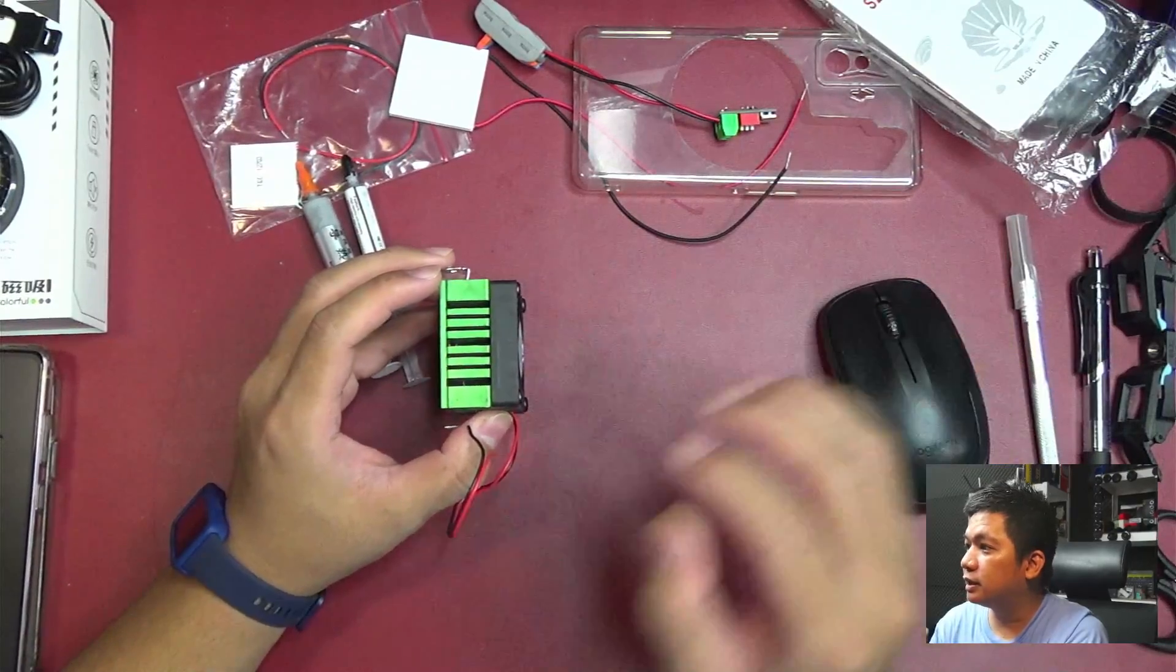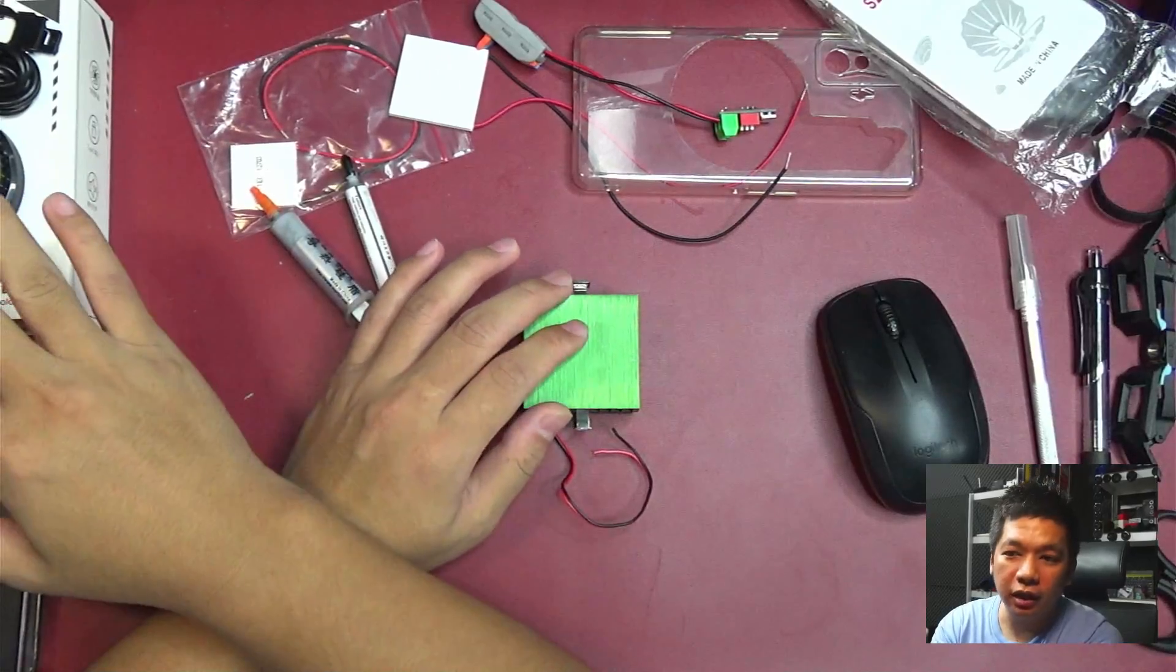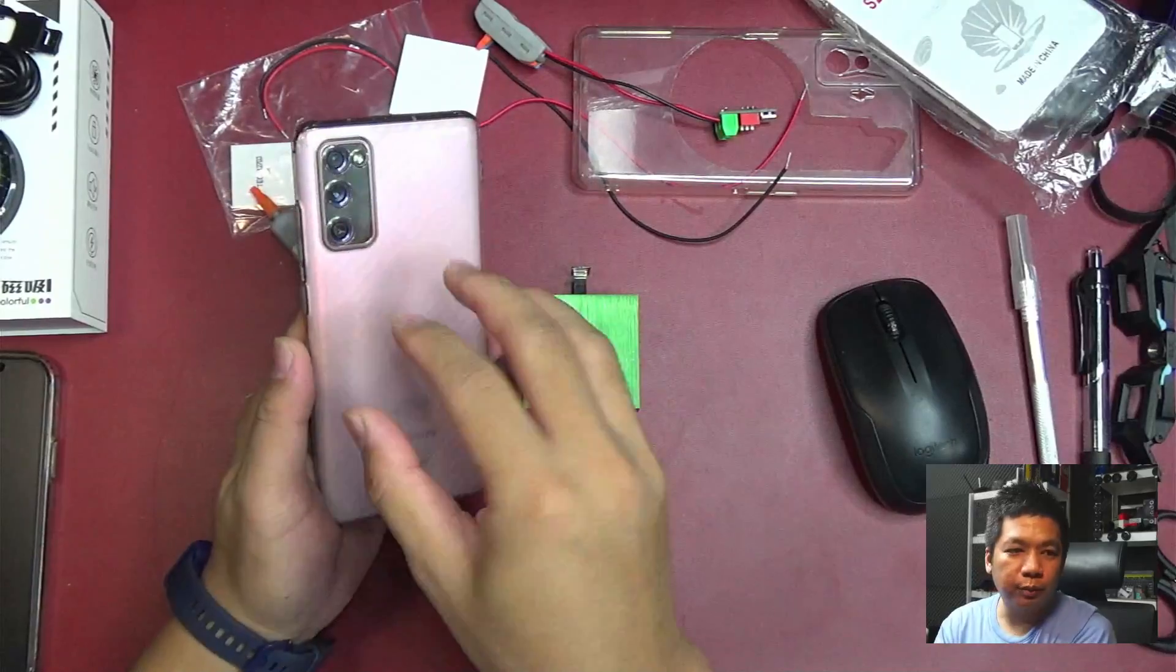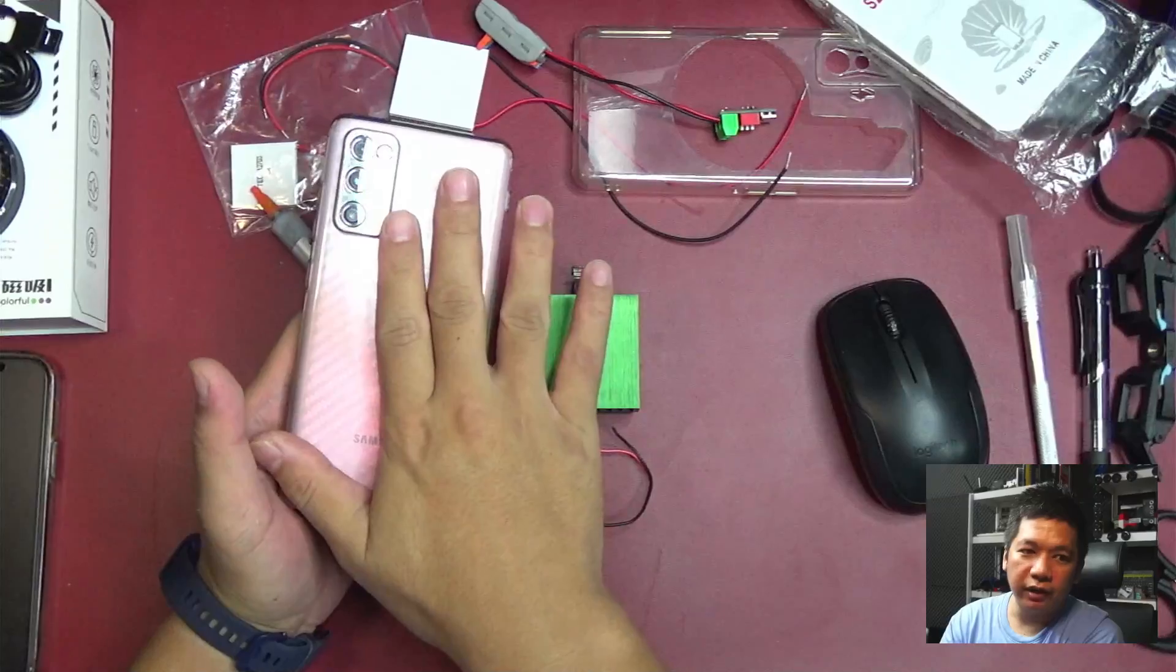F5 pake heatsink artic, ngefek nggak bro? Nggak bro. F5 itu nggak usah pake heatsink, kecuali buat cooler ya. Jadi pasang artiknya terus pasang cooler baru efek. Kalau cuma pasang artiknya doang atau pasang legendarinya doang, dia nggak ngefek. Kenapa? Dia ada gap antara, ada gap antara backdoor sama dalemannya.